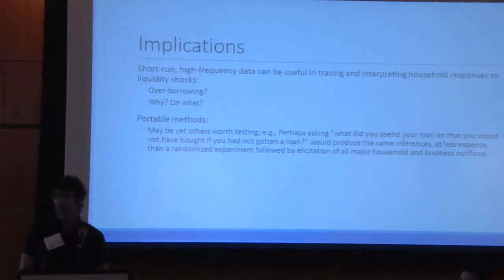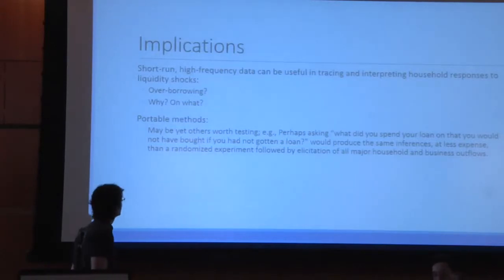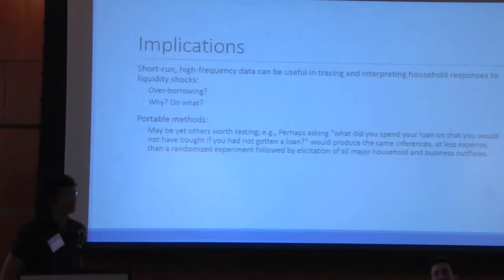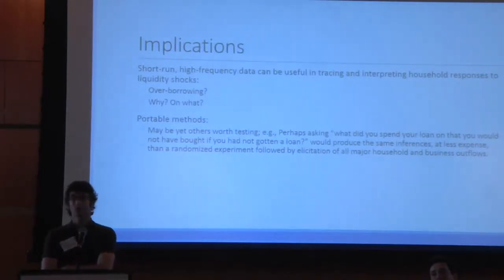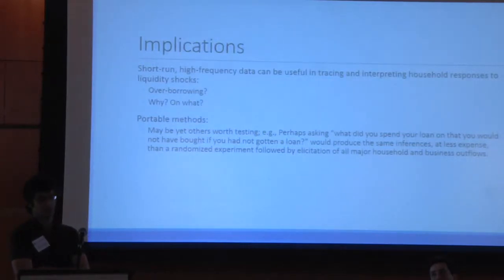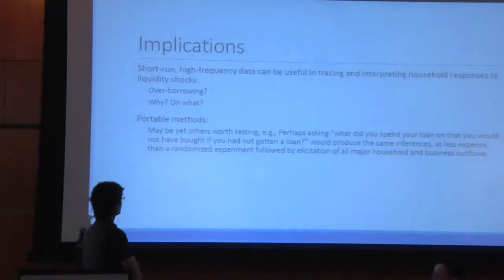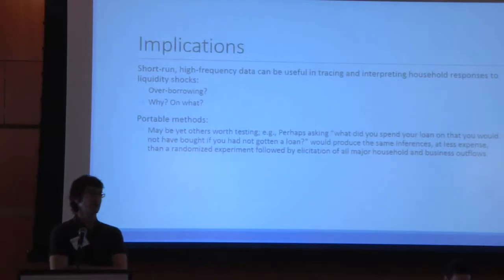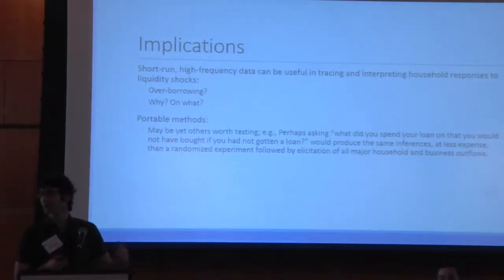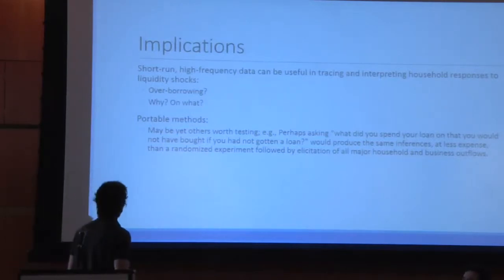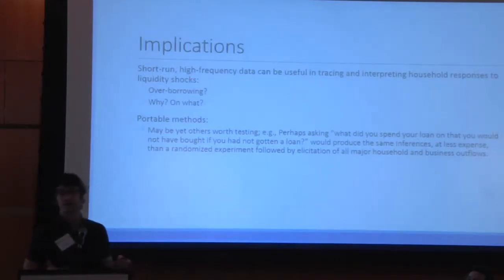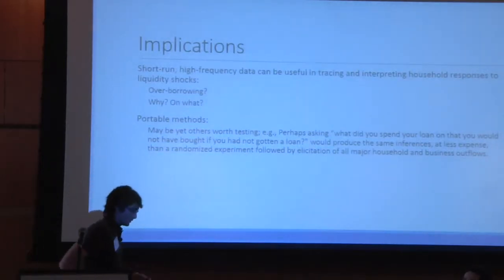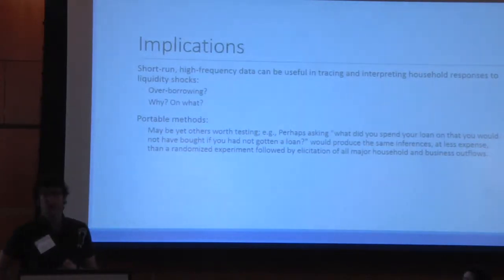Summing up, this paper is meant to be a demonstration or pilot of different methods for motivating and illustrating that short-run high-frequency data can be useful in tracing and interpreting household responses to liquidity shocks. Ultimately we hope it will be useful for teasing apart some of the trillion dollar questions we've been wrestling with today: are people borrowing too much? Is credit too readily available or not readily available enough? If people are over-borrowing, what are they over-borrowing on? We hope researchers will take the methods we've used and begin to run with them.